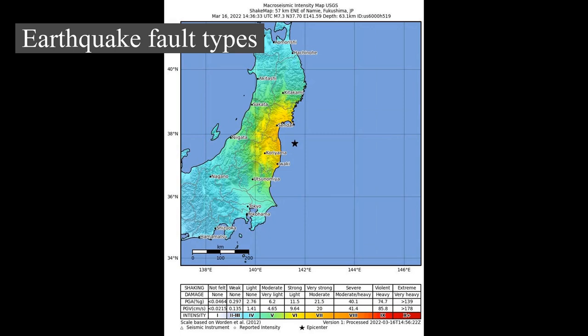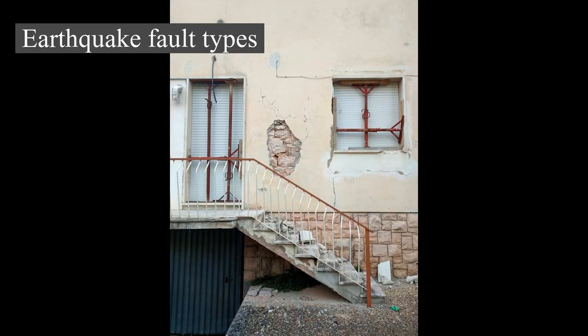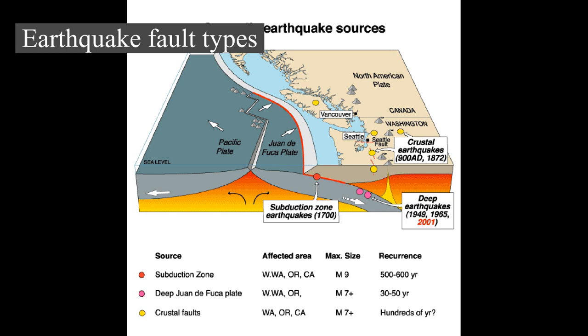The topmost brittle part of the Earth's crust and the cool slabs of tectonic plates descending into the hot mantle are the only parts of our planet that can store elastic energy and release it in fault ruptures. Rocks hotter than about 300°C (572°F) flow in response to stress and do not rupture in earthquakes. The maximum observed lengths of ruptures in a single event are approximately 1,000 km (620 mi), as seen in the Alaska 1957, Chile 1960, and Sumatra 2004 earthquakes, all in subduction zones.